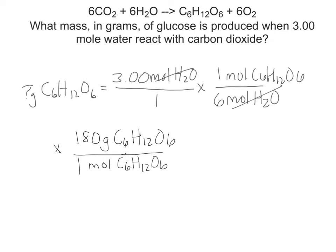So just like in our last screencast, our next step uses our molar mass. Now my moles of glucose will cancel. And to solve my problem, I'm going to take 3 moles of water divided by 6 moles times 180 grams, and I get an answer of 90 grams of glucose. Pause the video if you need to, to write this example down in your notes. Then continue with the other examples.